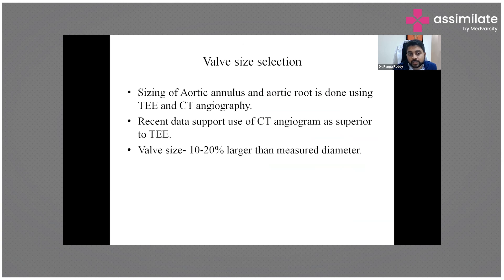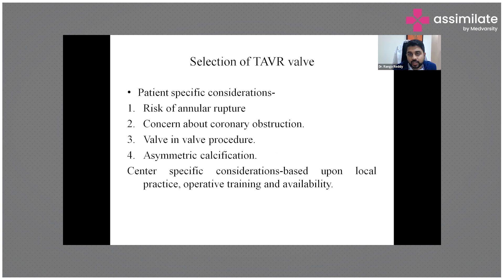For valve size selection, sizing of the aortic annulus and aortic root is done using transesophageal echo and CT angiography. Recent data supports CT angiogram as superior to TEE. Valve size is always taken 10 to 20% larger than the mean diameter. The TAVR valve selection includes whether it is a balloon-expandable or self-expandable valve.